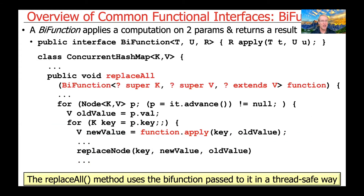Let's look at how replaceAll is implemented in the Java source code. replaceAll uses the BiFunction passed to it in a thread-safe way. The parameter to replaceAll is called 'function,' though it's a BiFunction, and it takes those three type parameters. As it iterates through all elements in the concurrent HashMap, it calls the apply method on the BiFunction, passing in the key and the existing value. It applies the key to the old value, returns a new value, and then that new value replaces the old value in the map for that particular key — all atomically and in a thread-safe way.